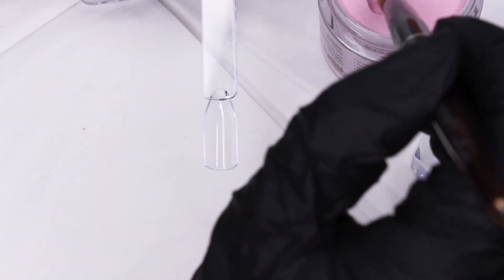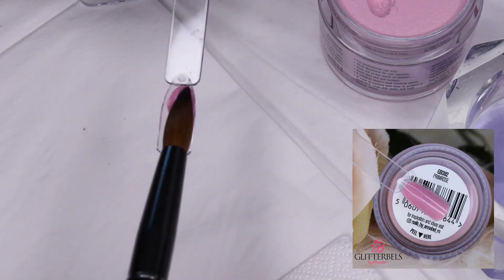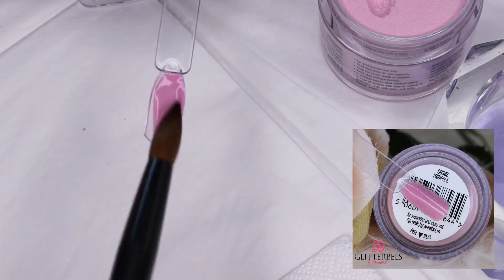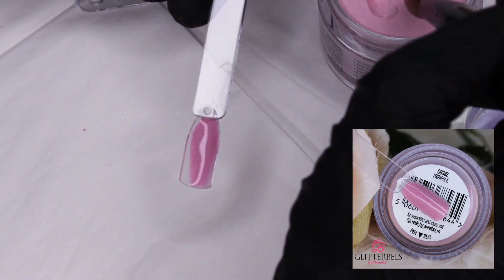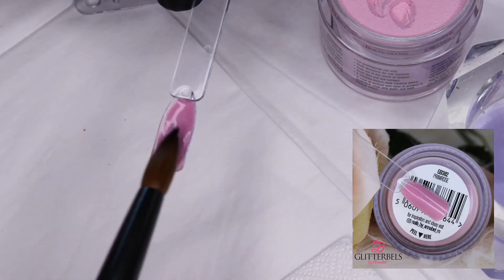Next we have Primrose, a very nice medium to light pink. I would say this one has more of a slight metallic or shimmery finish, and as you can see, super easy to apply.